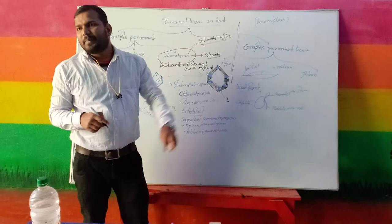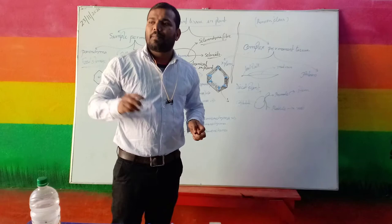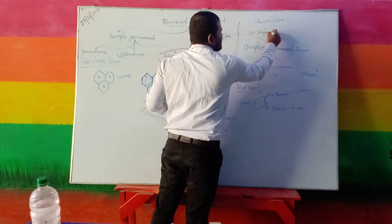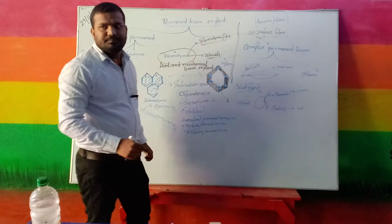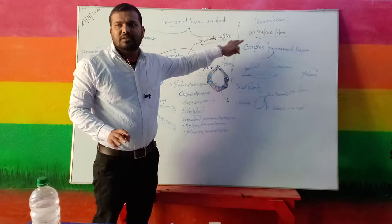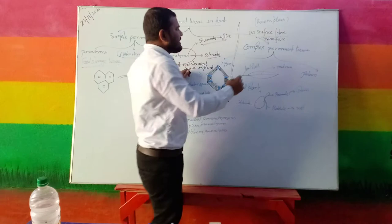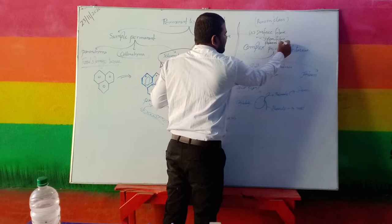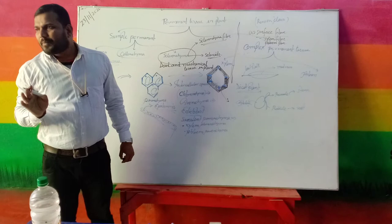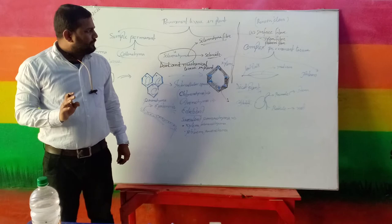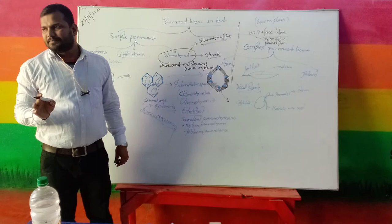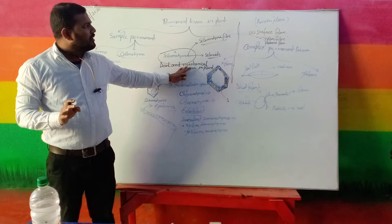Different types of sclerenchyma fibers are present. For example, in coconut, sclerenchyma fiber is present as coir fiber. Some sclerenchyma fibers are associated with the xylem, termed xylem fiber. Some are associated with the phloem, termed phloem fiber. The function of sclerenchyma: it provides mechanical support to the plant. Some sclerenchyma fiber and coir fiber prevent seed dispersal. These are the simple permanent tissues.